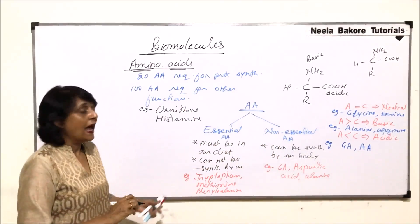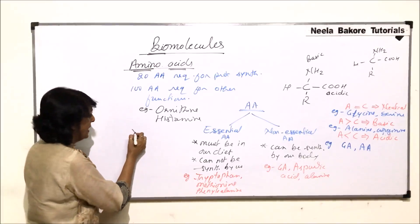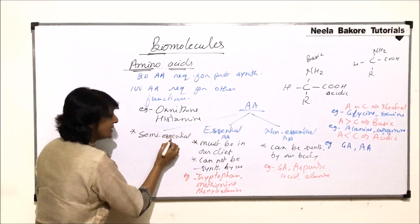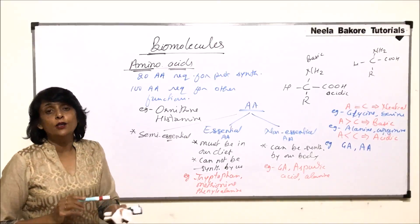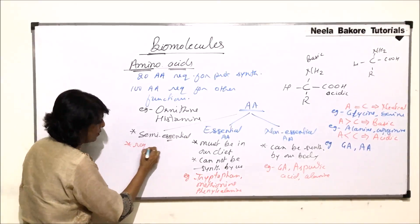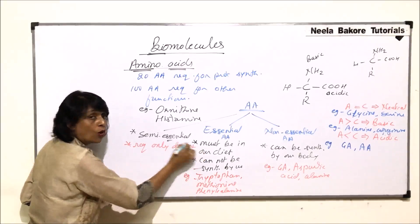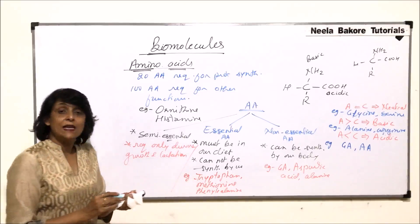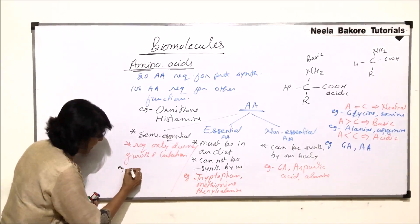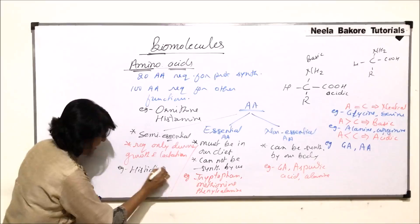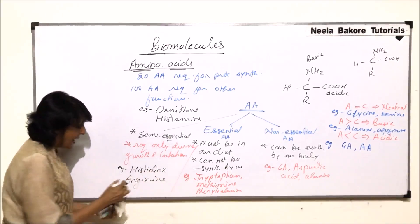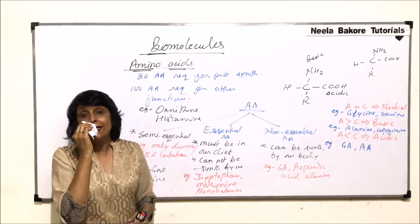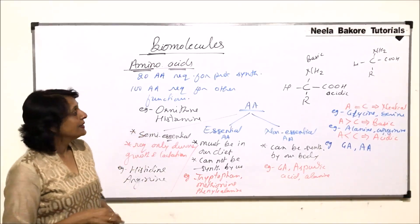There is one more category that can be kept under essential or separately — these are called semi-essential amino acids. They are essential, meaning they must be present in the diet, but only during a specific stage. They are required only during the growth period and lactation. Examples of semi-essential amino acids are histidine and arginine. During those two periods, they must be present in our diet because we cannot synthesize them.